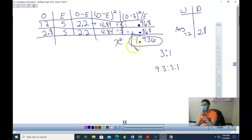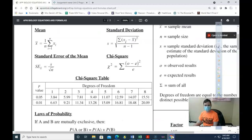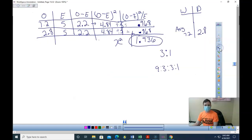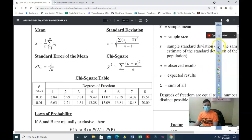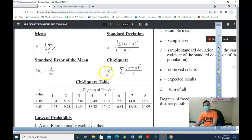Now, how do I draw a conclusion based on that value? I look at this chart, right? First things first, I have to find my degrees of freedom.